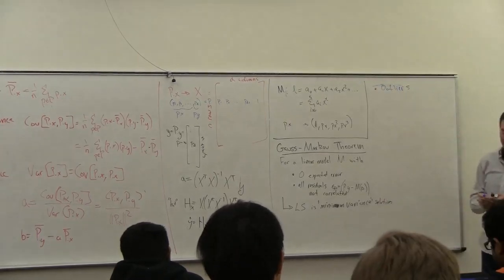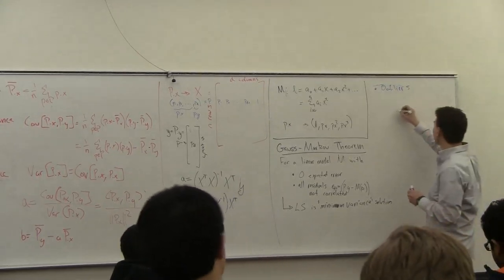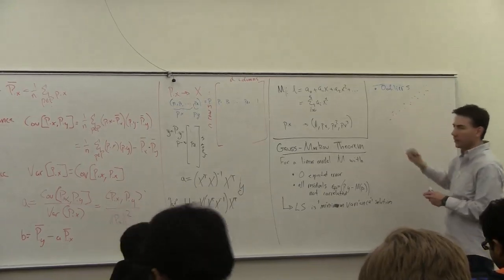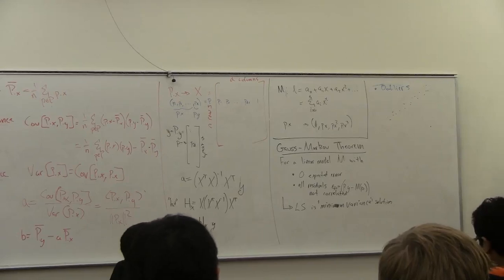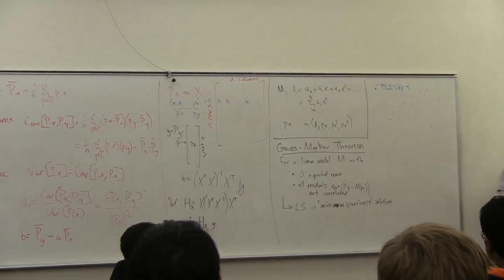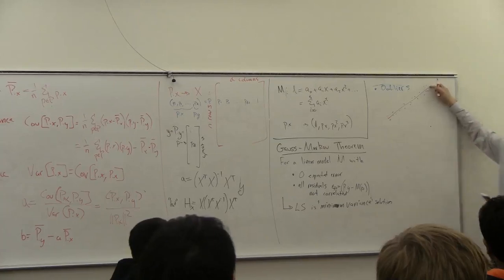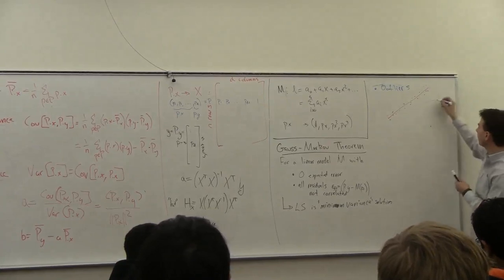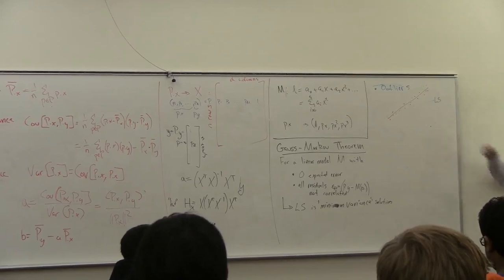One of the problems with least squares is that it's very susceptible to outliers. So say you have data that looks like it follows some linear pattern, except there's one data point that's way down here. The least squares solution is going to fit something like this, when really the data looks like it should be fit by a line here. So this is the least squares solution — it's not going to deal well with these outliers.